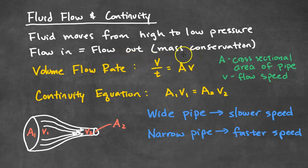A way that we can represent flow is by the volume flow rate, which is the volume divided by time equals AV. A is the cross-sectional area of the pipe, and V is the flow speed. The continuity equation states that A1V1 equals A2V2. The consequence of this equation is that a wider pipe will result in a slower speed, and a narrower pipe will result in a faster speed.